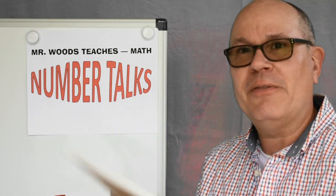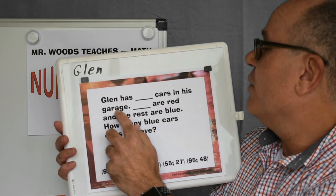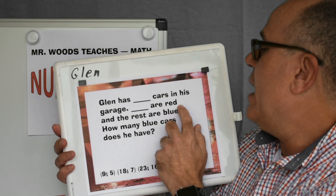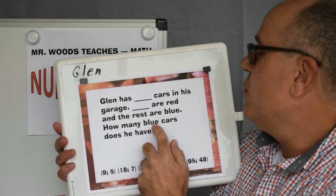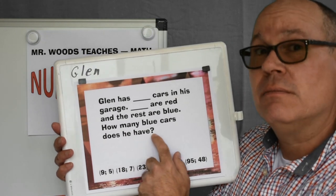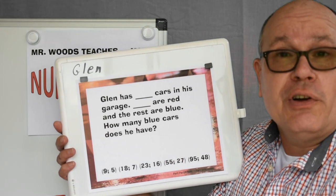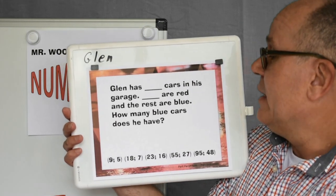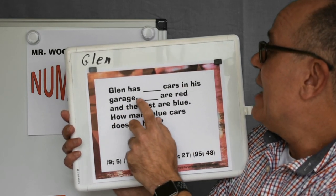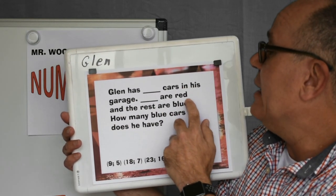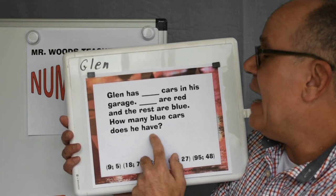Hey, today I'm going to feature my friend Glenn here. Glenn has blank cars in his garage. Blank are red and the rest are blue. How many blue cars does he have? Hmm, I don't know. Well, you can plug in these numbers. You can use your own. I'm going to use Glenn has 10 cars in his garage and 5 are red. And the rest are blue. How many blue cars does he have?